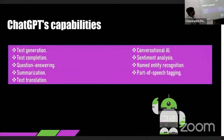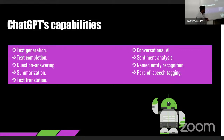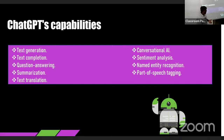ChatGPT is capable of text generation, text computation, question answering, summarization, text translation, and conversational AI — its biggest strength is that it gives answers in a more conversational way, like a human and not like a robot. It also supports sentiment analysis, named entity recognition, and parts of speech tagging.